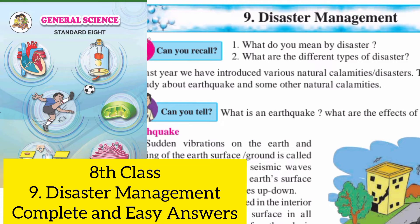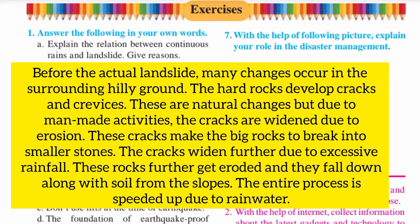Welcome to the channel. Today I am going to give the answer of Chapter 9, Disaster Management, from a standard general science. Let's solve the question answer. Question number one: answer the following in your own words. Part A: explain the relation between continuous rains and landslides, give reasons. You have to pause the video and write the answer.